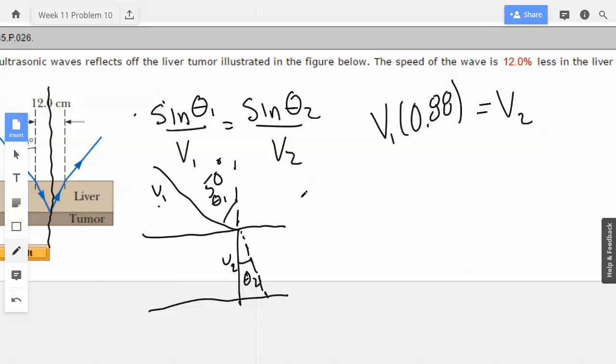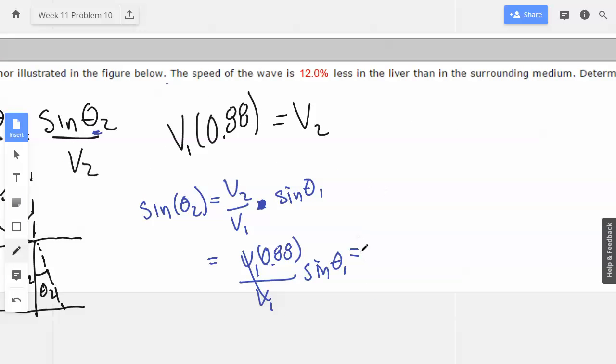So now we should be able to rearrange this. What we don't know is theta 2. So I'm going to say that sine of theta 2 equals V2 over V1 sine of theta 1. Now we know that V2 is V1 times 0.88 over V1 sine theta 1. The V1's cancel.